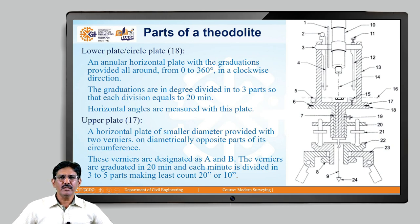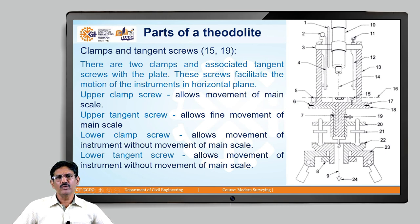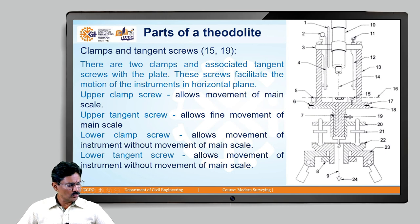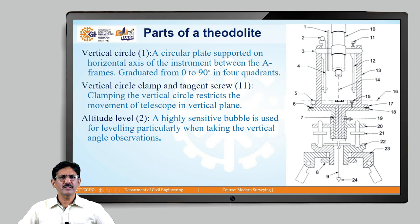Looking at the named parts of the theodolite: part 18 is the lower circle plate, which houses the main scale; part 17 is the upper circle plate, which houses the vernier. Parts 15 and 19 are the clamps — there are four: upper clamp screw, upper tangent screw, lower clamp screw, and lower tangent screw. The upper clamp allows movement of the main scale; the upper tangent screw allows fine movement of the main scale. The lower clamp allows movement of the entire instrument along with the main scale and vernier, so there is no displacement of the vernier with respect to the main scale. Part 21 is the spirit level with bubble and graduation for leveling, along with the foot screws.